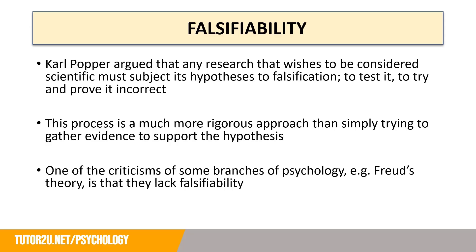Another key feature of science is falsifiability. Karl Popper argued that any research that wishes to be considered scientific must subject its hypotheses to falsification — to test it and try to prove it incorrect. This is a more rigorous approach than simply gathering evidence to support the hypothesis. Falsifiability is the idea that for something to be considered correct, you need to give people the opportunity to prove it false; only when they can't prove it false could you argue that your theory has weight. One criticism of some branches of psychology is that they lack falsifiability — for example, Freud's psychodynamic theory is very difficult to test, as the unconscious and some of his more vague concepts are hard to measure.